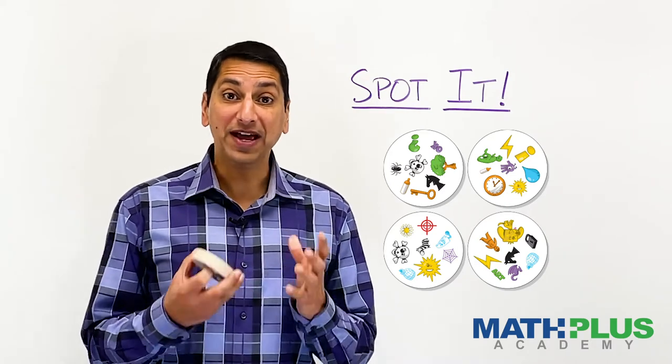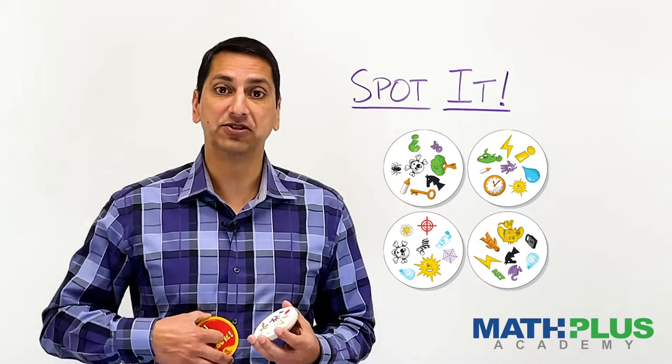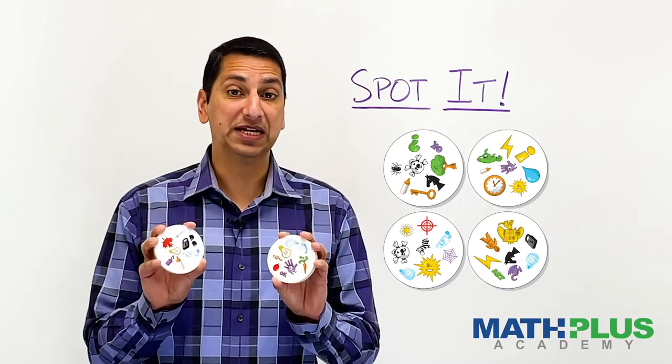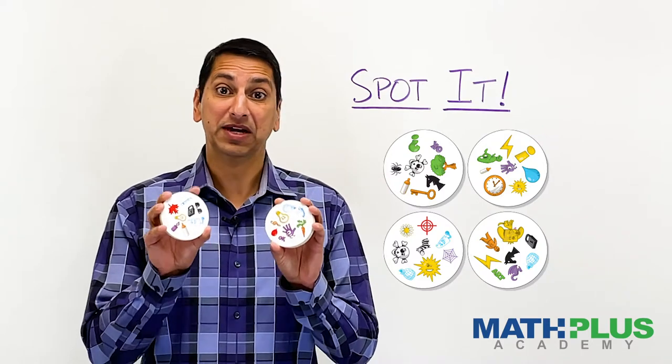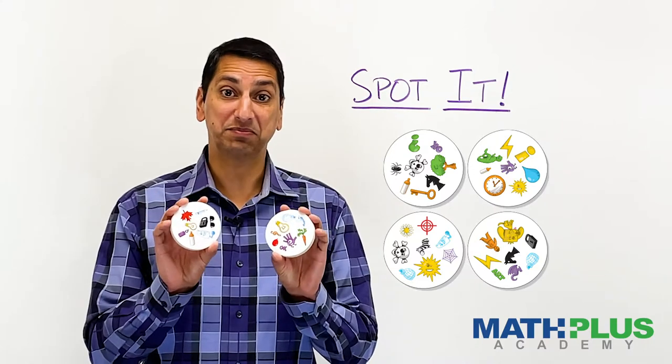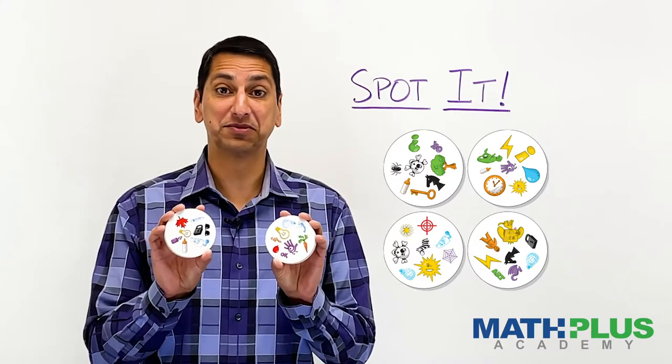And what's fascinating about this game is that if I choose any two cards at random like this, there will always be exactly one symbol that matches on both cards. In this case, the light bulb is on both cards, none of the other symbols will match.